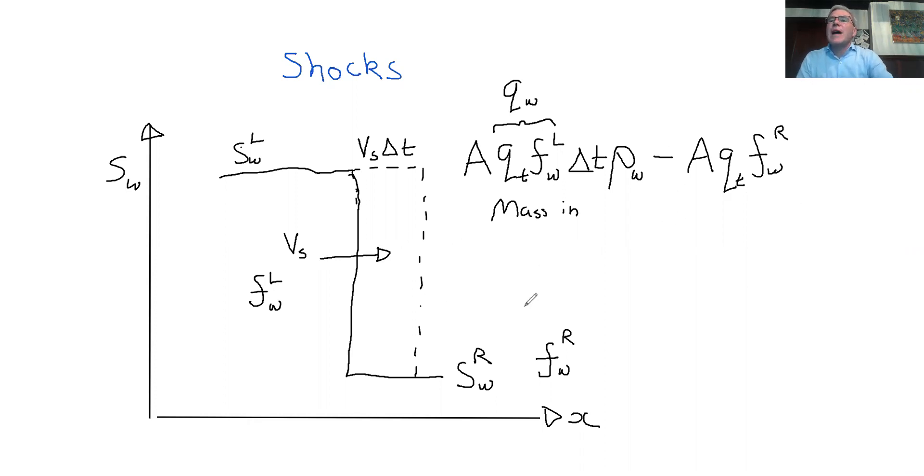So this is the mass that would flow out. So this is given by this, and then we've got the Δt.